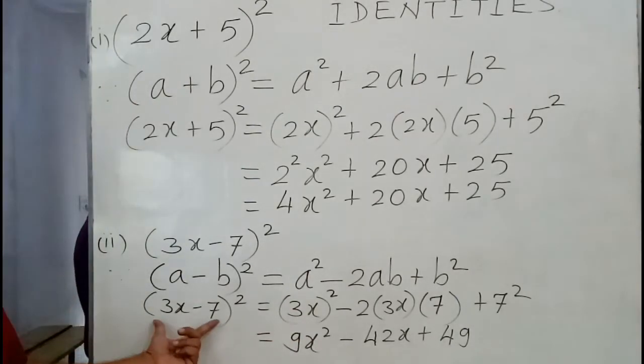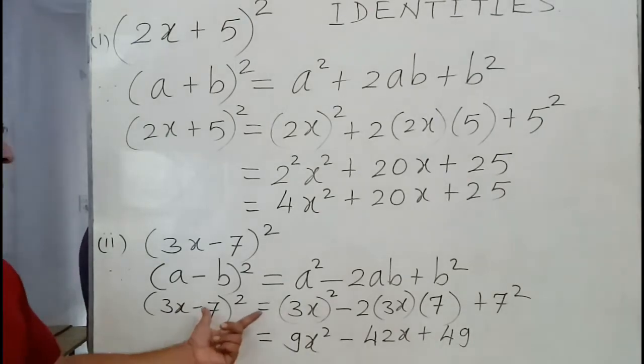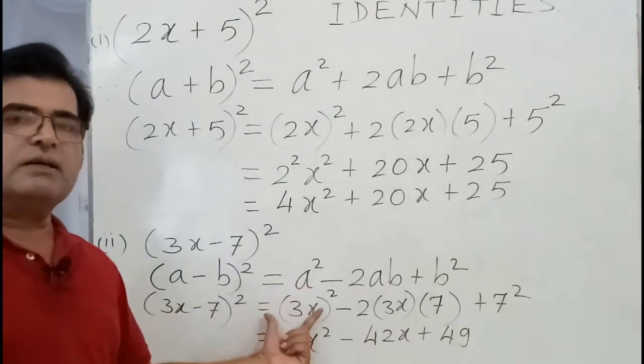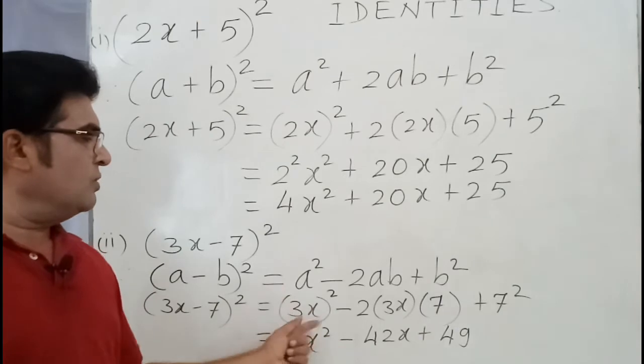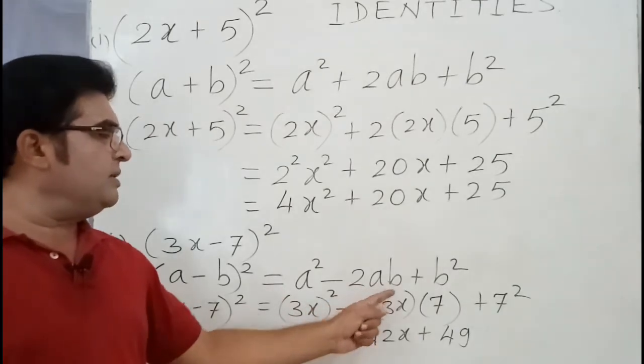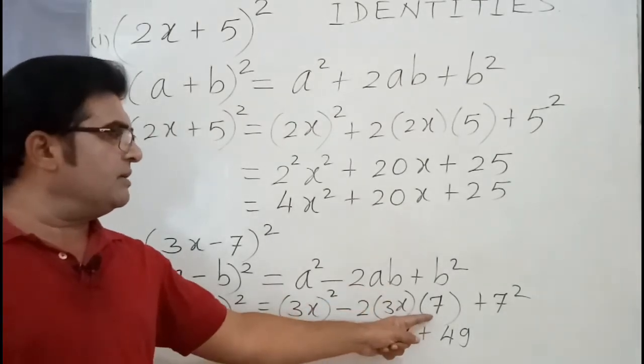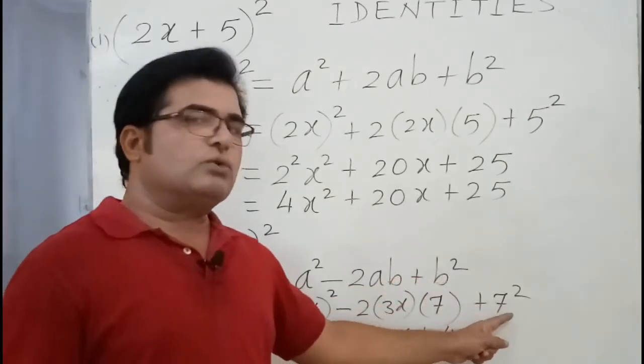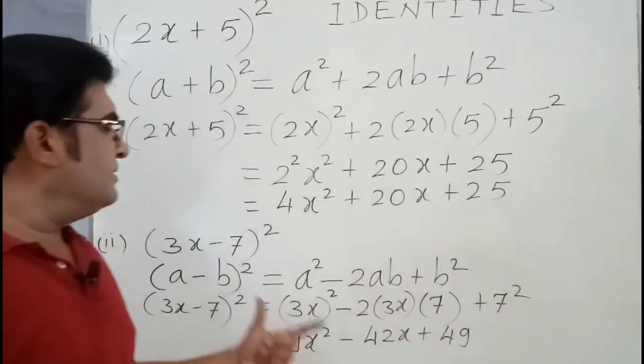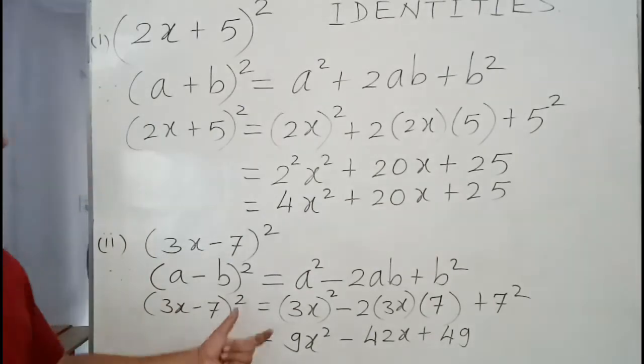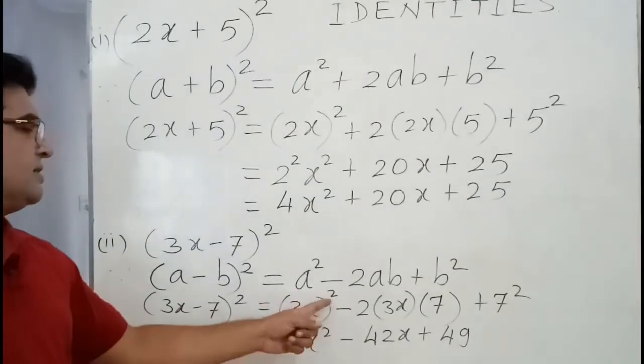Then you have to put the value according to the sum. (3x-7)² equal to a² is there. So put (3x)² minus 2ab means 2 × 3x × 7, plus b² is there so plus 7². Then simplify. Here I have done direct simplification.